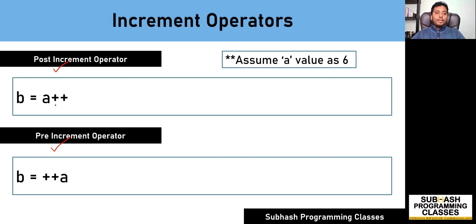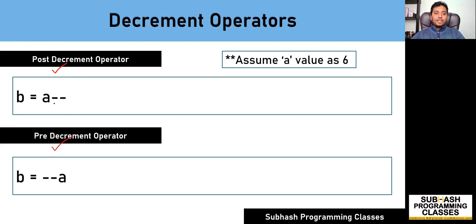When you keep the increment operator after the variable name, that is when this increment operator becomes your post increment operator. And when you keep the increment operator before the variable name, that is when it becomes your pre increment operator. Similarly, when you place the decrement operator after the variable name, it becomes your post decrement operator, and when you place it before the variable name, it becomes your pre decrement operator.